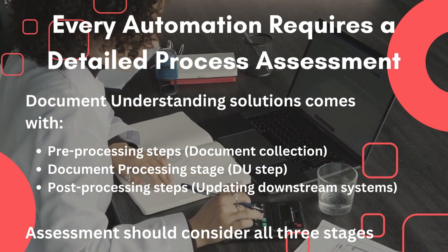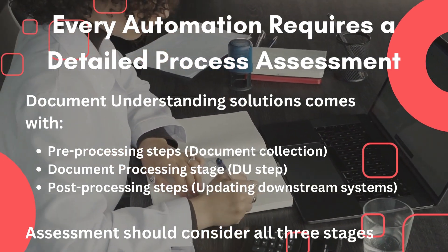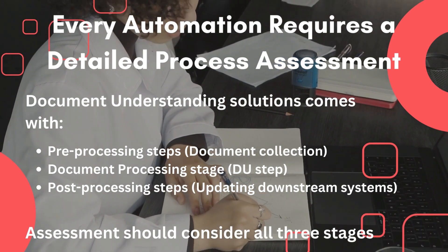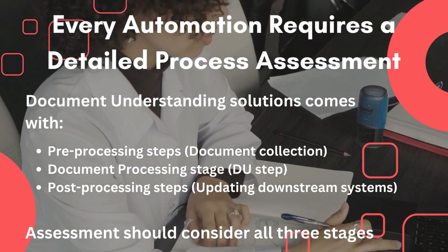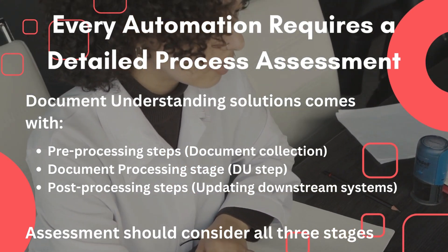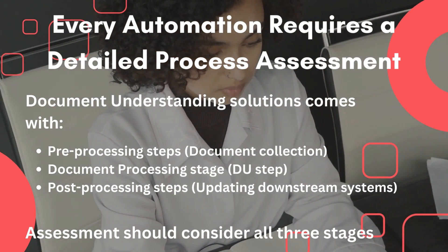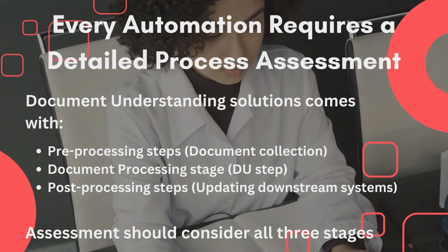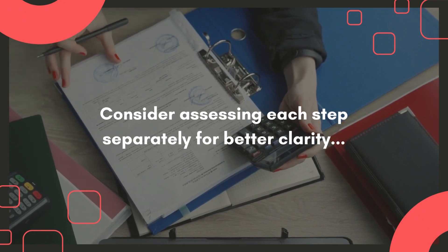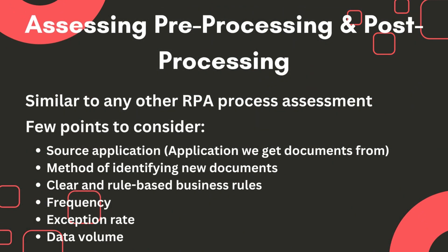In general, we have three parts in a document understanding project. One is the document collection part, the actual use tab, and then lastly the downstream system update. We basically need to consider all three stages to do a proper assessment.